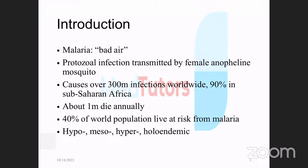Subsequently, it was discovered that malaria is a protozoan infection transmitted by the female Anopheles mosquito. It causes over 300 million infections worldwide, with 90% in sub-Saharan Africa. It was estimated that about 1 million die annually — some estimates suggest someone dies every minute from malaria or its complications.